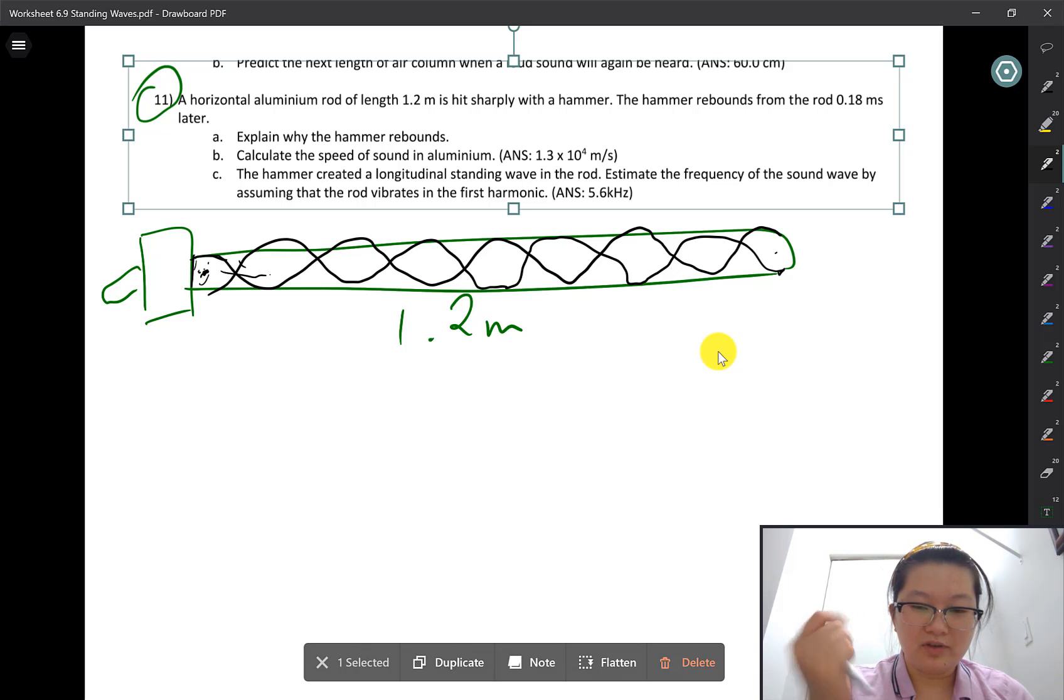So, reflection off the other end creates a standing wave and resonance inside the rod, which causes the hammer to rebound back.